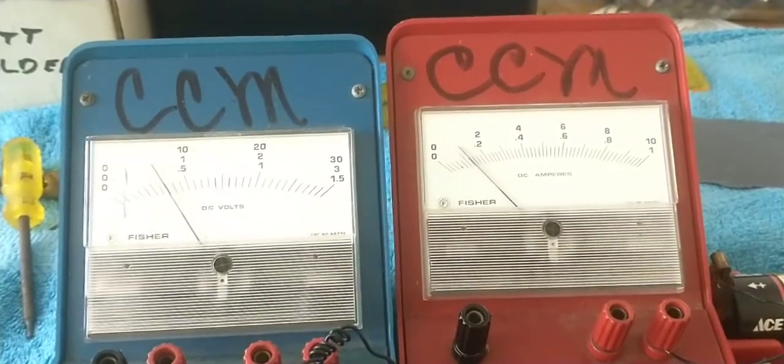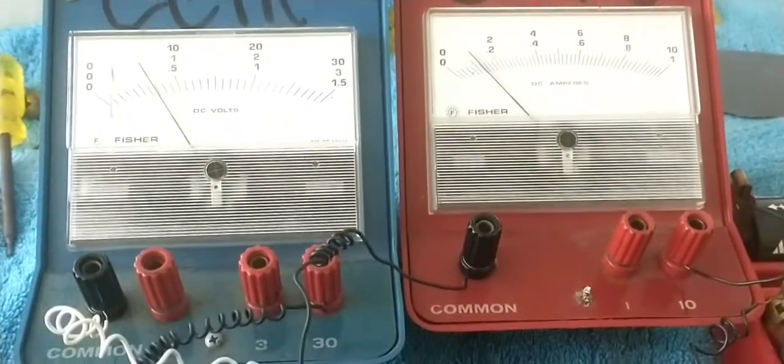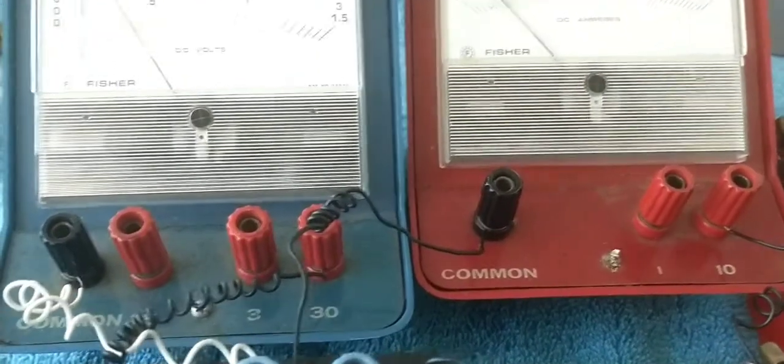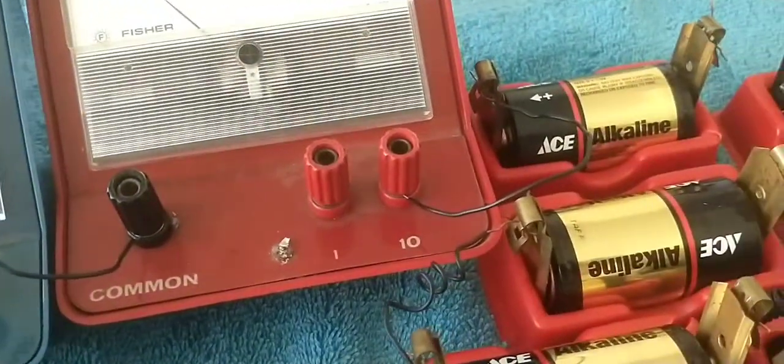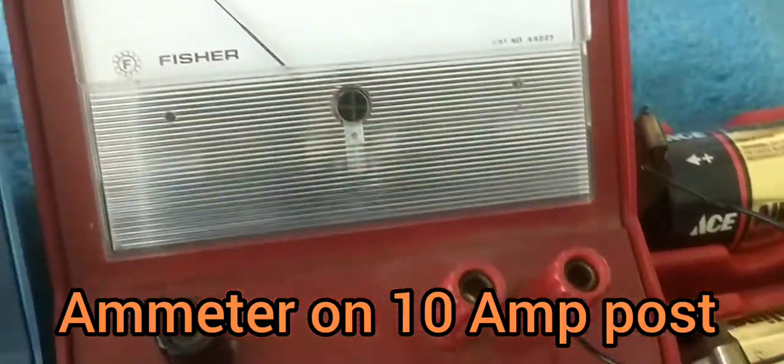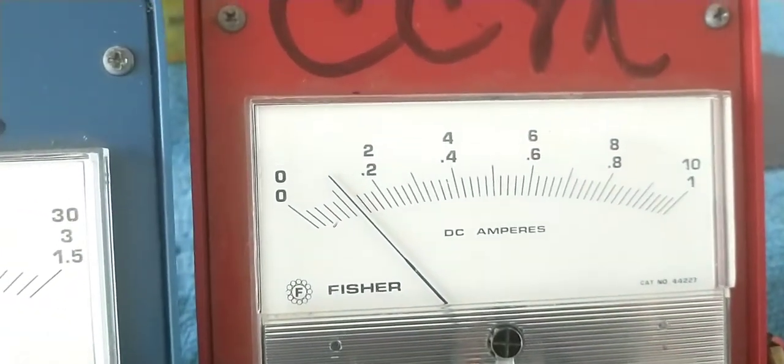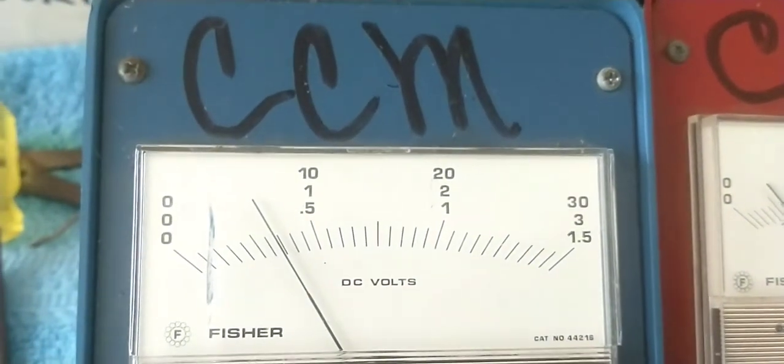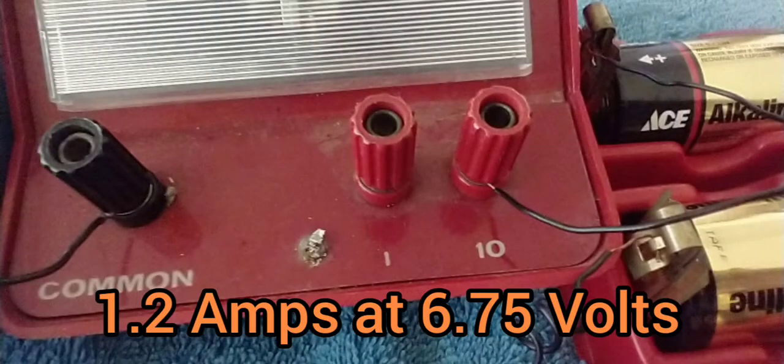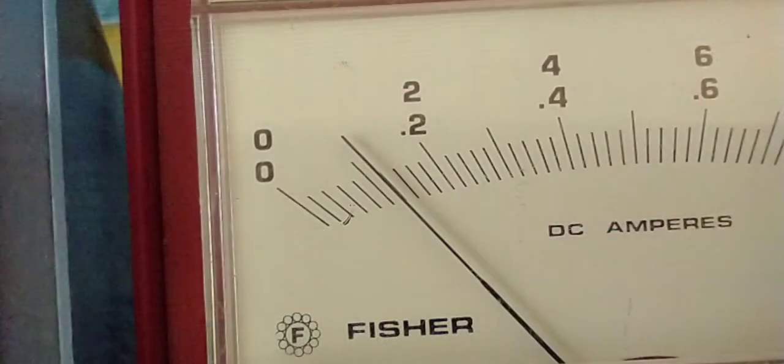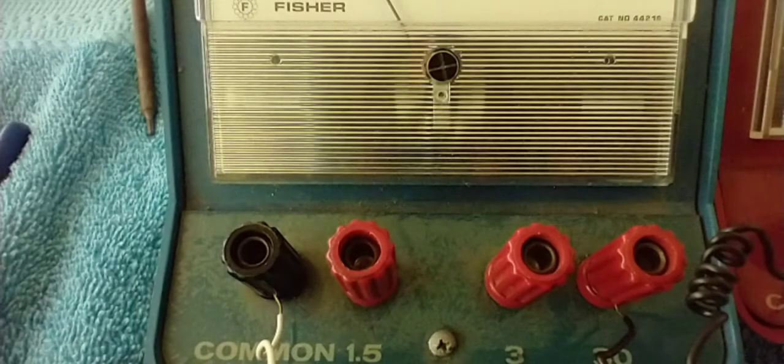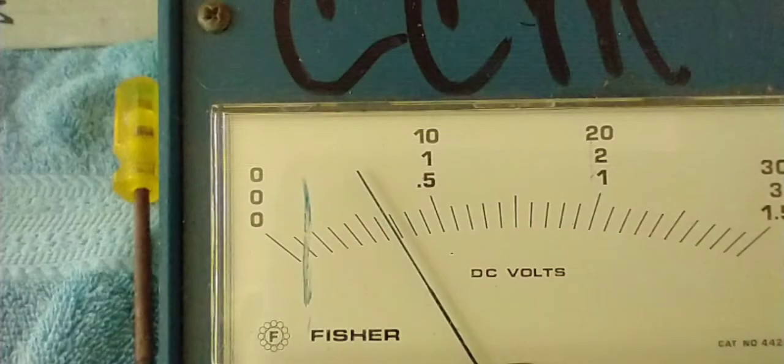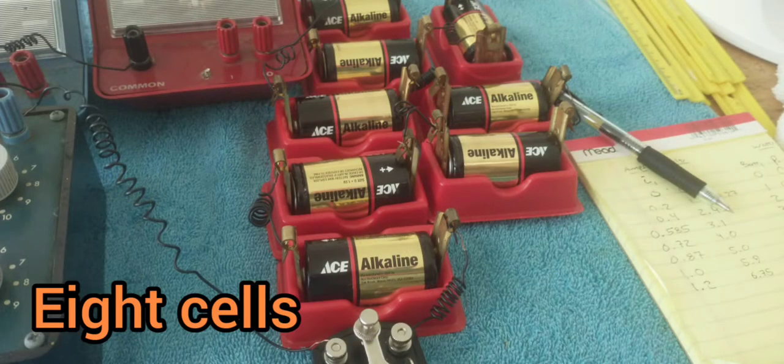We've moved on to our next set of batteries here. Got about seven in there. I've had to switch to the 10 amp post. Because now I'm going to exceed the bottom scale. So I've now got to read the top scale. A little trickier. It goes 0 to 2, 4, 6, 8. So I'm just above one at 1.2 amps. And about 6.75 volts. I've switched posts on the ammeter.